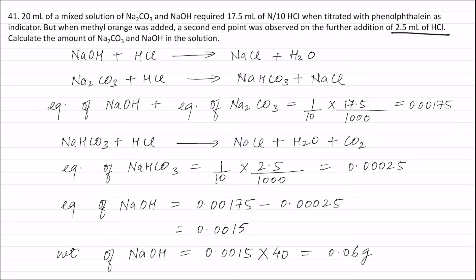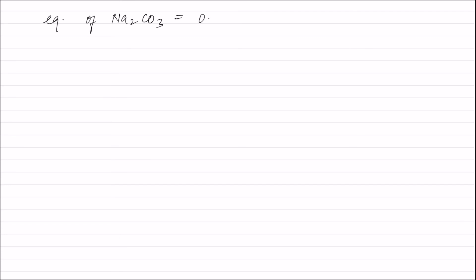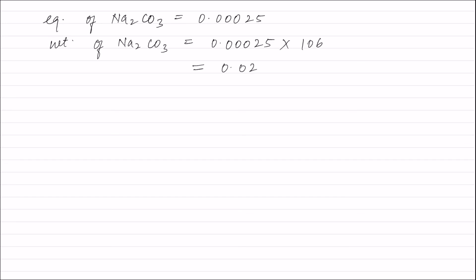Therefore, weight of NaOH present is 0.06 grams. Equivalence of sodium carbonate equals equivalence of NaHCO₃, which is 0.00025 equivalents. Therefore, weight of sodium carbonate = equivalence of Na₂CO₃ × equivalent weight of Na₂CO₃ = 0.00025 × 106 = 0.0265 grams. Therefore, weight of sodium carbonate is 0.0265 grams.